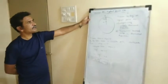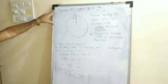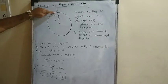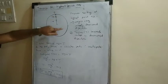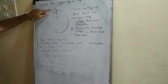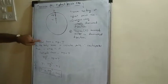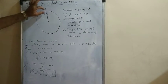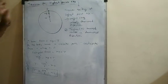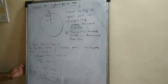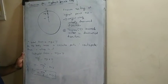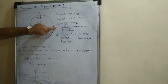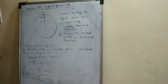Let us find tension at the highest point in VCM. The topmost point is the highest point of VCM. When the body reaches this topmost point, there are two forces acting on it: gravitational force (weight mg) acting vertically downward, and tension T in the string directed always toward the center of the circle.